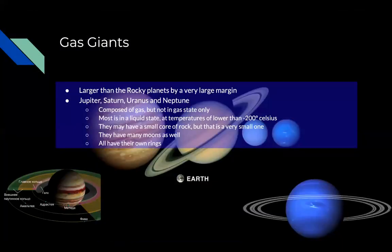Now onto the gas giants. They are a lot bigger than the rocky planets by a massive margin. To put it simply, if we take Jupiter — the biggest of all the gas giants — it's big enough to fit at least a thousand Earths inside it. That's how big it is.